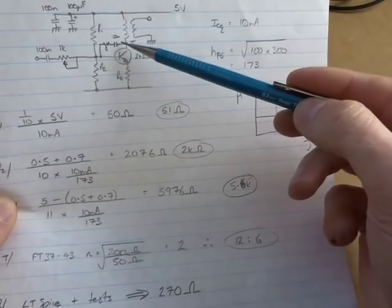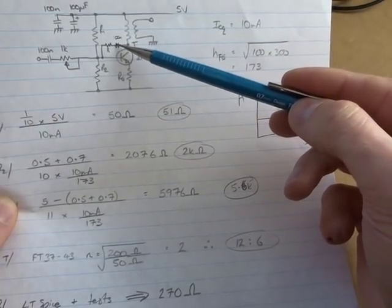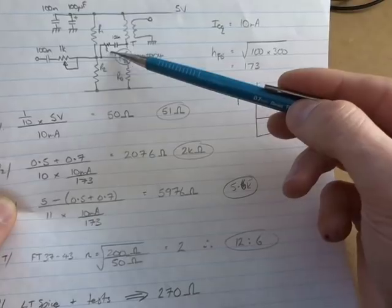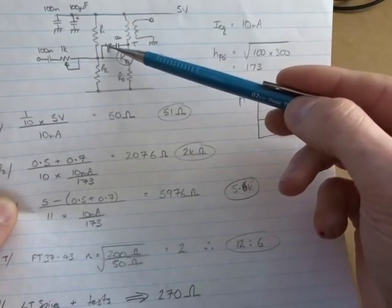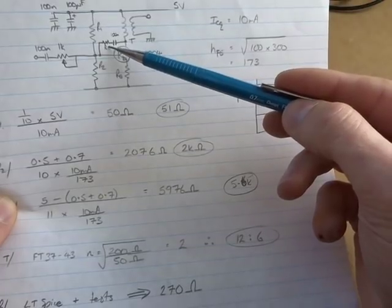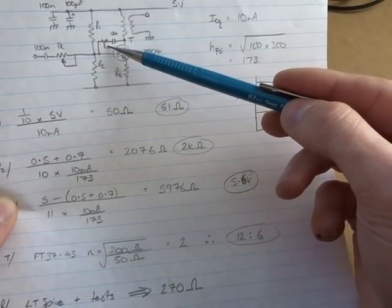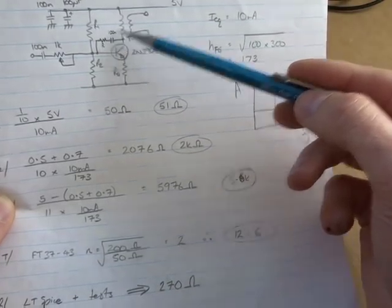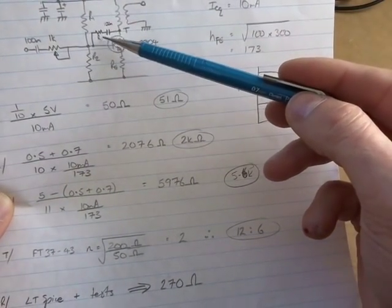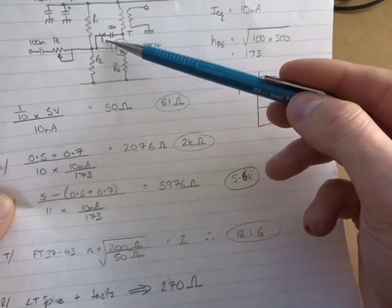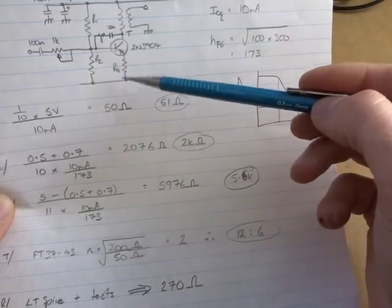Now for the feedback there, just using a 100 nF capacitor there, just a DC block, so we're not essentially shorting our collector with our base, so DC blocking there. And then using a combination of LT Spice and some actual tests down here, determined that a value of 270 ohms was about right. So that's what we ended up with.